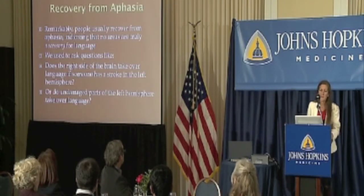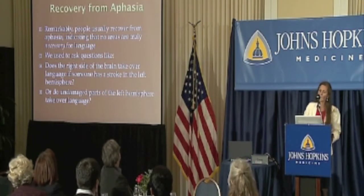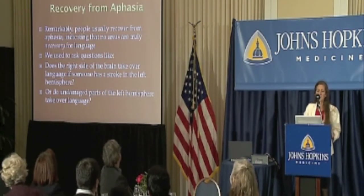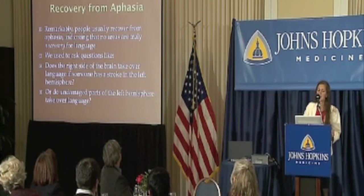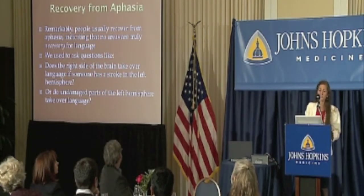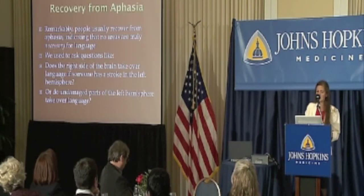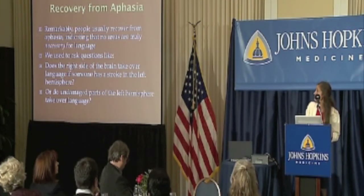But remarkably, people generally recover from aphasia. So maybe no area of the brain is truly necessary for language — other parts of the brain can take over for the damaged part. We used to ask: does the right side of the brain take over language if someone has a stroke in the left hemisphere, or do undamaged parts of the left hemisphere take over?